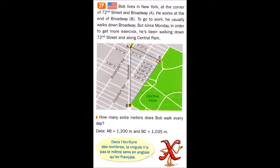To go to work, he usually walks down Broadway. But since Monday, in order to get more exercise, he's been walking down 72nd Street and along Central Park. How many extra meters does Bob walk every day?